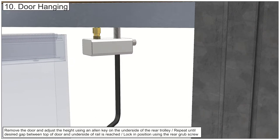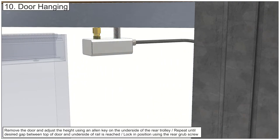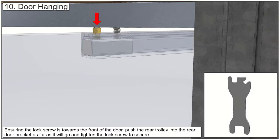Remove and adjust the lock screw to achieve the required gap and reinstall. Ensuring the lock screw is towards the front of the door, push the rear trolley assembly into the rear door bracket as far as it will go and tighten the lock screw to lock the trolley into the door.